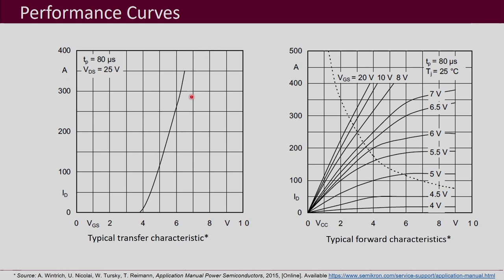Next, performance curves will also be provided in the data sheets. The transfer characteristics show G_FS — this slope is your G_FS and this is your threshold voltage. This is the curve between your drain current I_D and gate-to-source voltage V_GS, and what you can see is that the threshold voltage is around 4 volts. Above that voltage, when we apply the gate-to-source voltage, that is when the drain current will start building up.